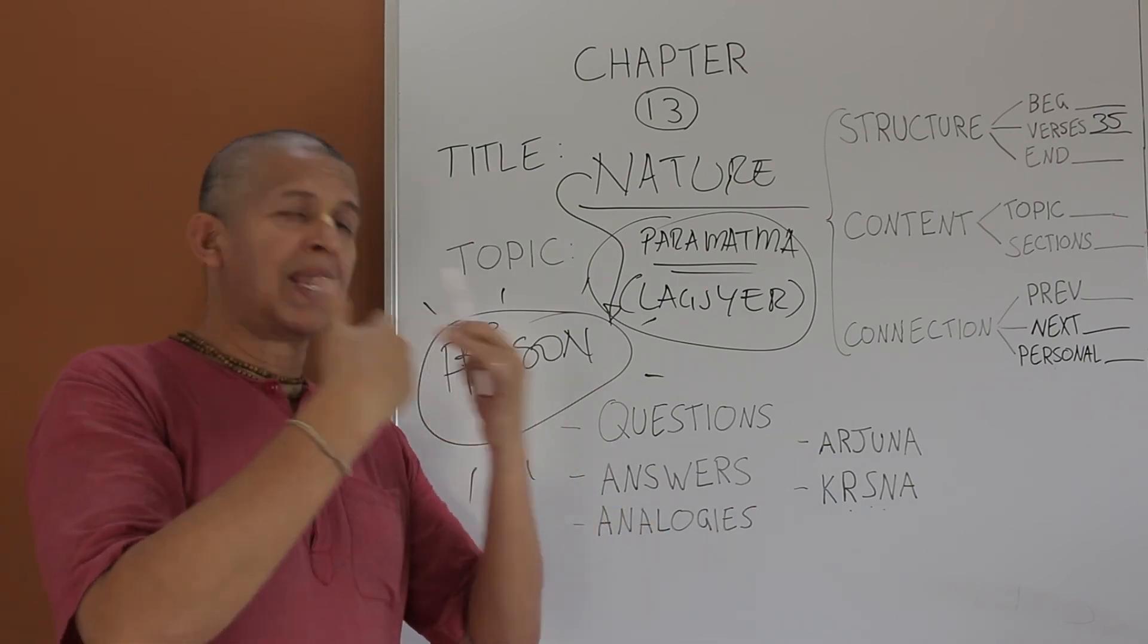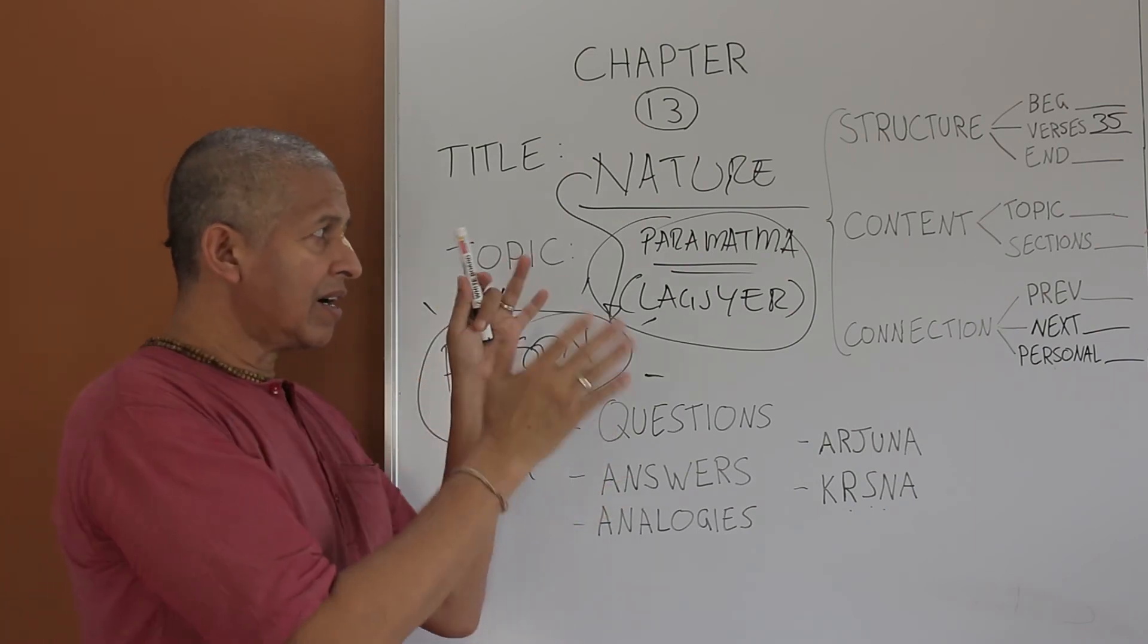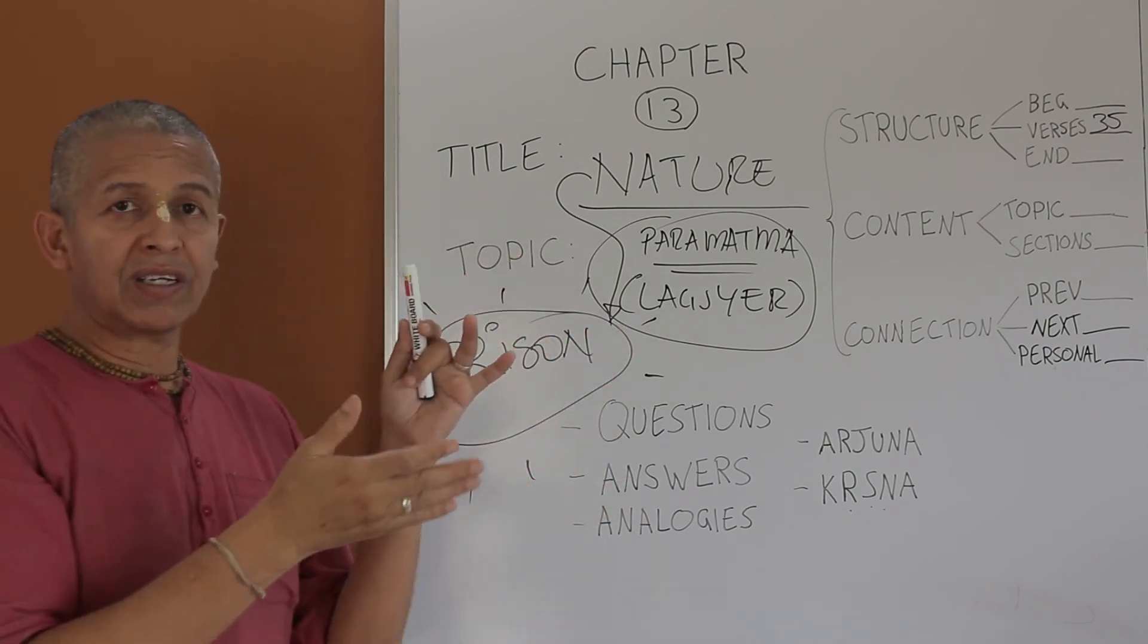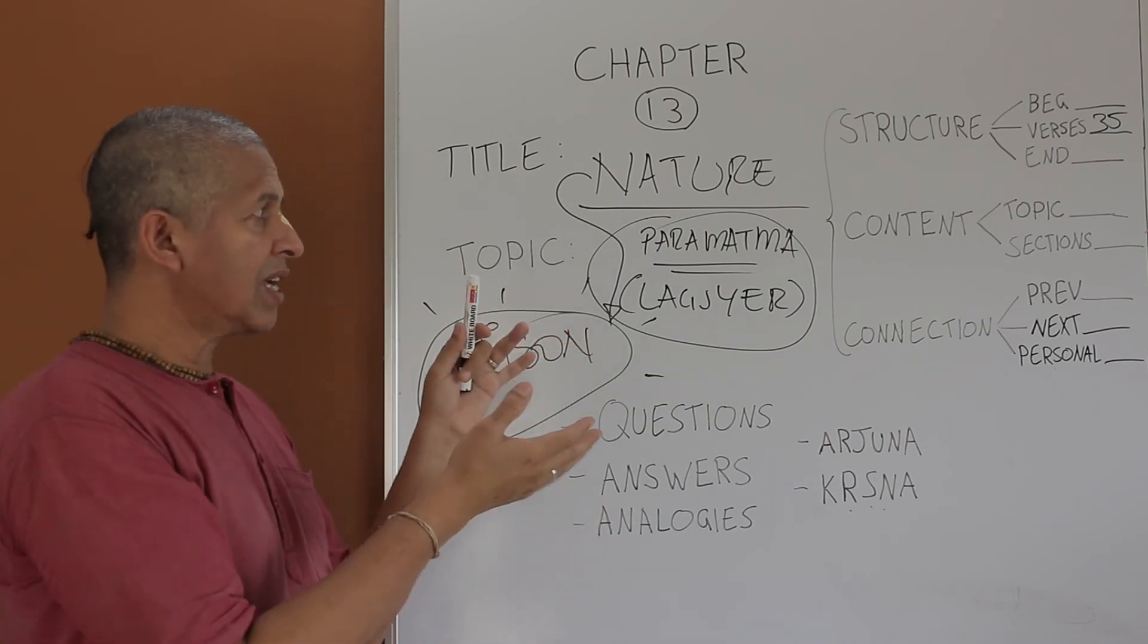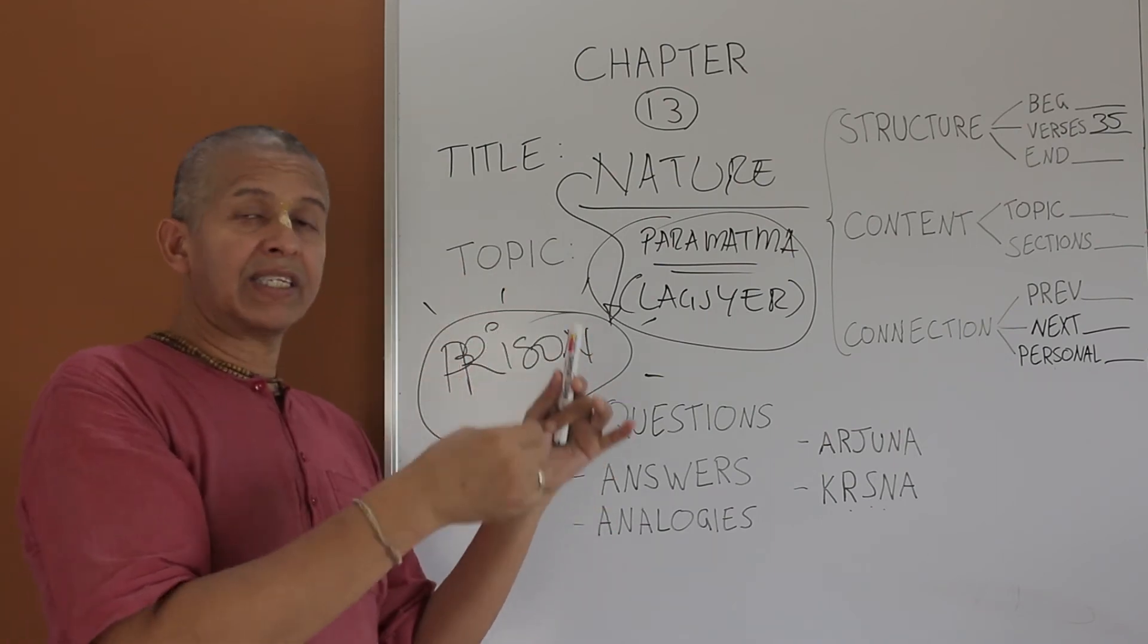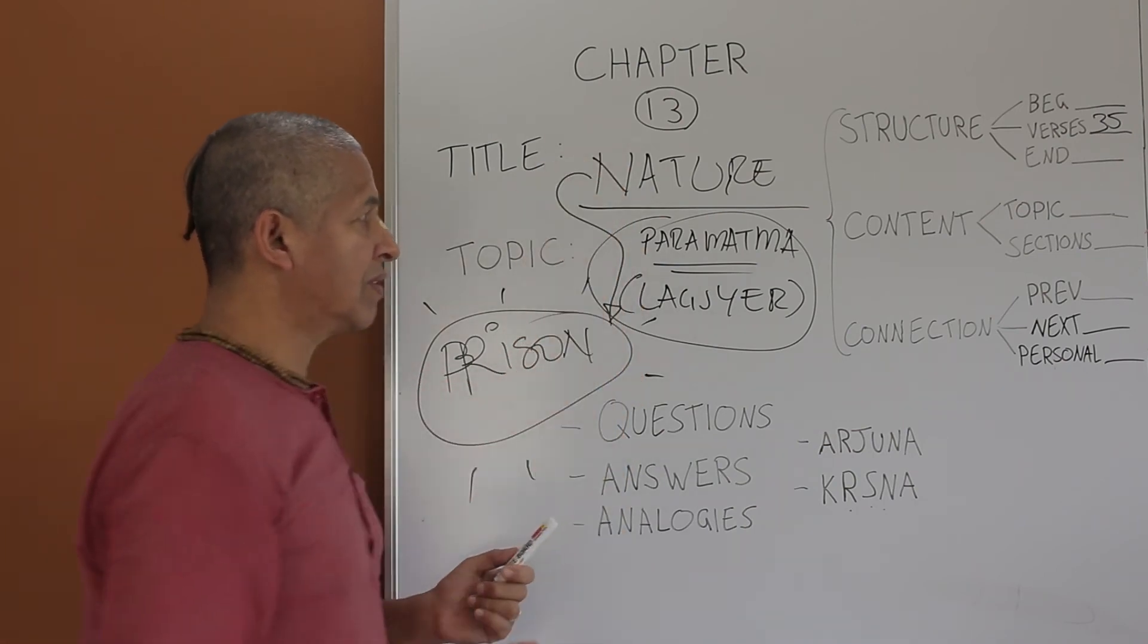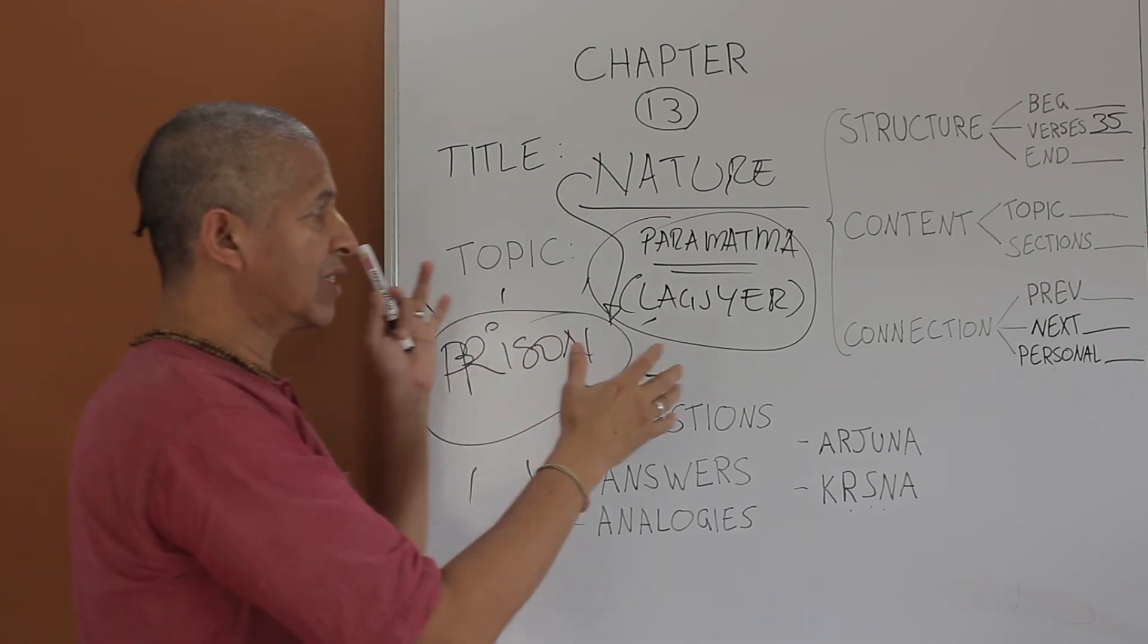It's not just a blank statement, or something that he says casually. Here, Prabhupada often says, Krishna consciousness is a science. So here it will be explained how is it that a devotee, a jiva that takes up devotional service, can be free from this prison house called material nature. That's the connection.